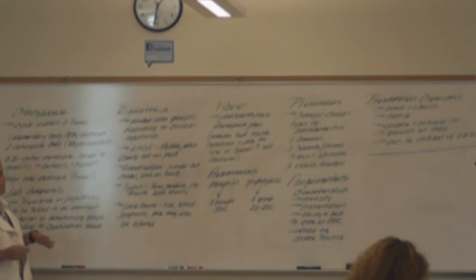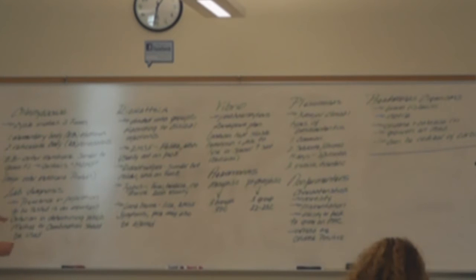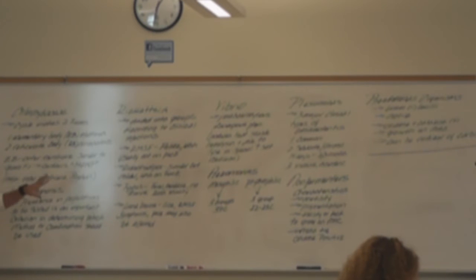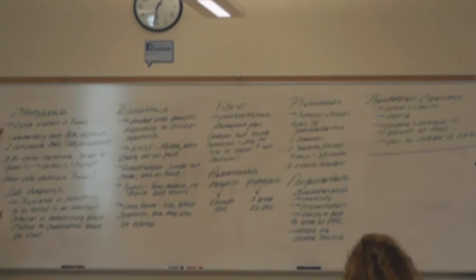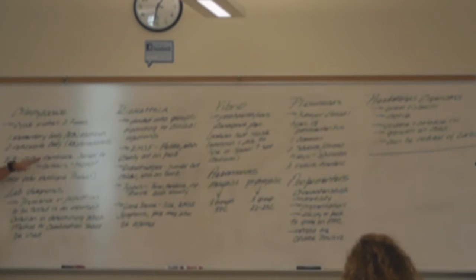The other thing I want you guys to pay attention to are some of the things written up on the board. They're kind of scattered, but they're within the framework of the three different sections we have to cover. For chlamydia, the cycle involves two forms — just know the difference between the elementary body, which is infectious, and the reticulate body, which is not infectious.